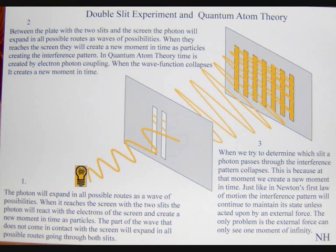Between the plate with the two slits and the screen, the quantum particle wave will take all possible routes. When they reach the screen, they will create the interference pattern and also a new moment in time as particles.